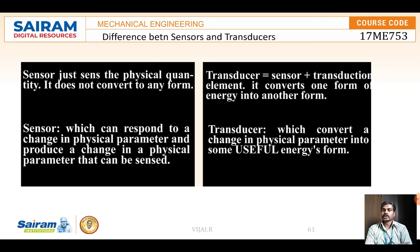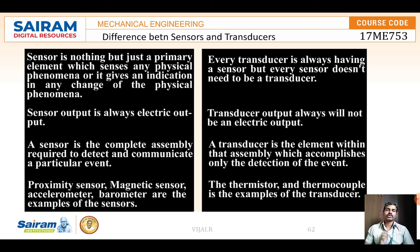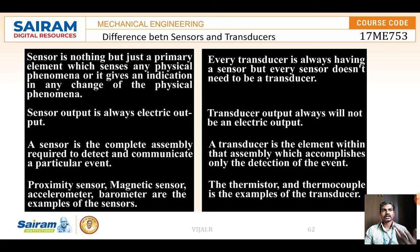A transducer converts one form of energy to another form, but a sensor just senses the physical quantity and normally gives an electrical output. A sensor responds to a change in the physical parameter and produces a corresponding output. In a transducer, the energy is converted into a useful energy form. A sensor is a primary element which senses any physical phenomena and gives an indication. The transducer does not always need to give an electrical output — it may give displacement or any other form.